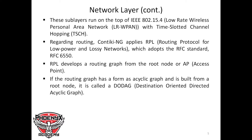Regarding routing, ContikiNG applies RPL — the Routing Protocol for Low-Power and Lossy Networks — which adopts the RFC standard RFC 6550. RPL develops a routing graph from the root node or access point. When the routing graph is formed as an acyclic graph — no loop, no cycle — built from a root node, it is called a DODAG: Destination-Oriented Directed Acyclic Graph.